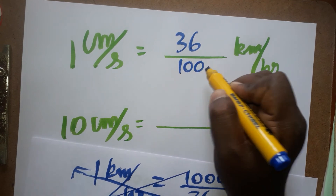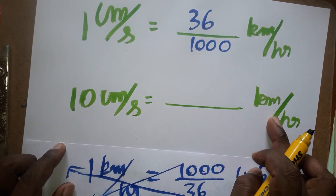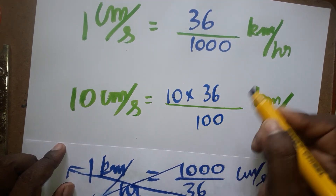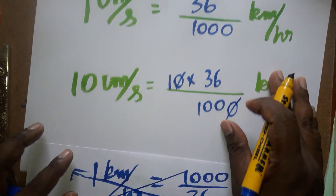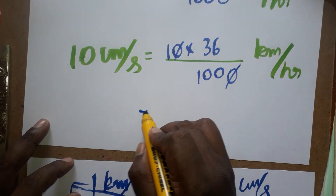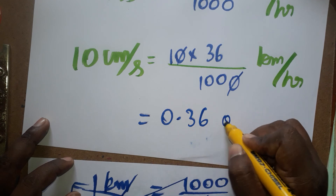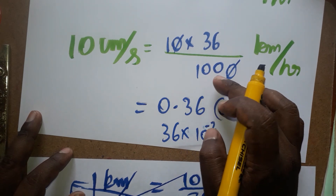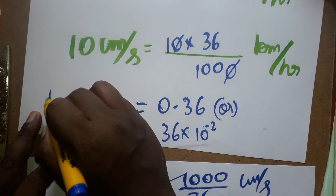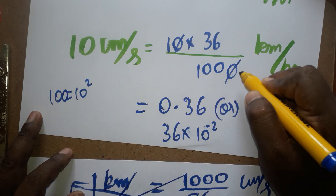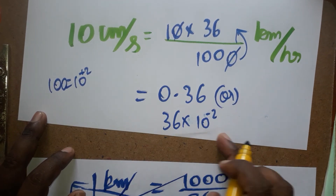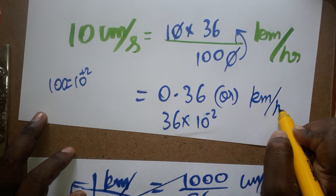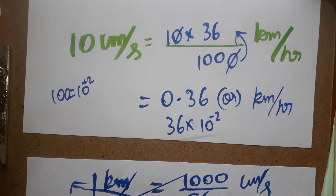The conversion factor is 36 divided by 1000. For the example: 10 centimeter per second to dash kilometer per hour. So 10 into 36 divided by 1000 — multiply this number. The 10 and part of 1000 get cancelled, giving 36 divided by 100, which equals 0.36. This is 36 into 10 to the power minus 2, because 100 is 10 squared, and from the denominator the power changes to minus 2. So the answer is 0.36 kilometer per hour. Thank you for watching my channel, please subscribe.